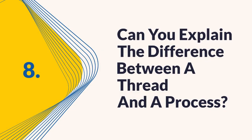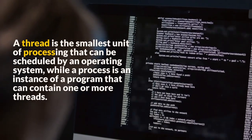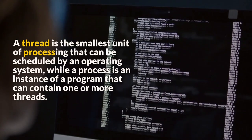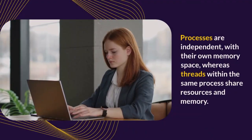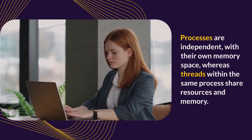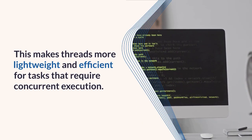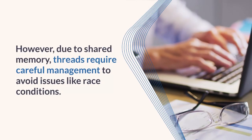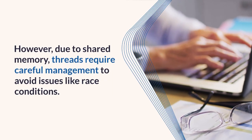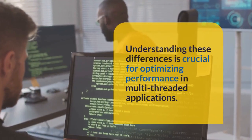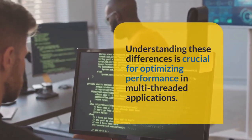Question 8: Can you explain the difference between a thread and a process? A thread is the smallest unit of processing that can be scheduled by an operating system, while a process is an instance of a program that can contain one or more threads. Processes are independent with their own memory space, whereas threads within the same process share resources and memory. This makes threads more lightweight and efficient for concurrent tasks. However, due to shared memory, threads require careful management to avoid issues like race conditions.